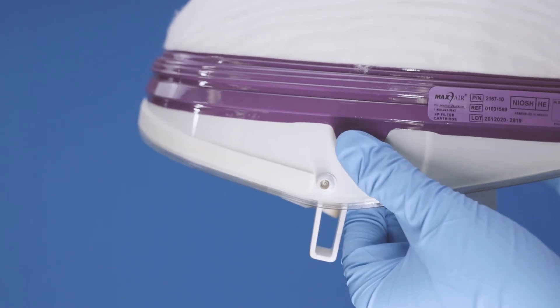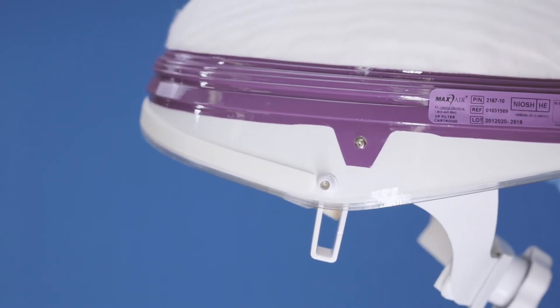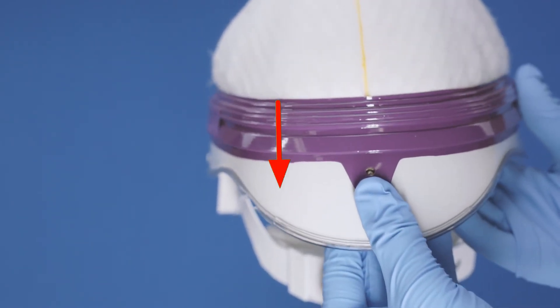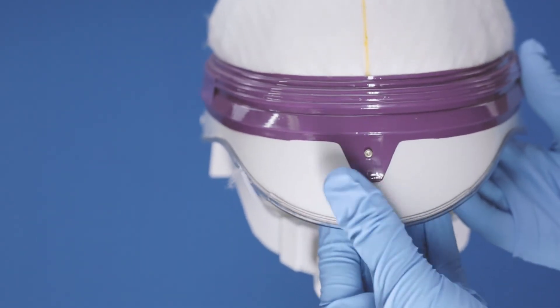When the side tab holes are over the helmet snaps, snap them to the helmet. Typically starting at the rear, roll your thumb over the rear tab downward while pressing inward to snap it onto the helmet snap.